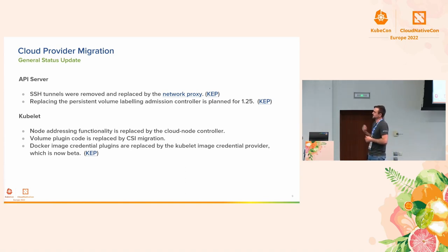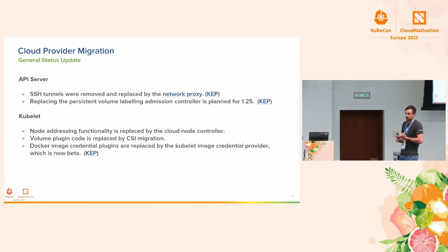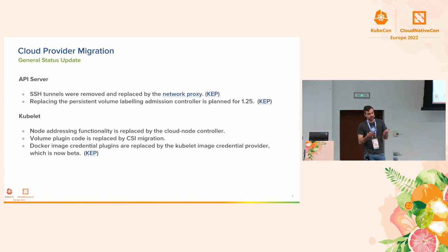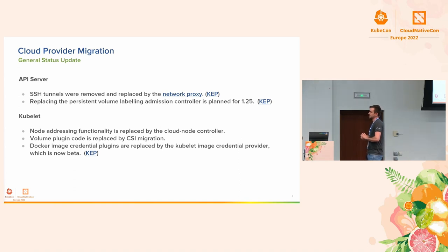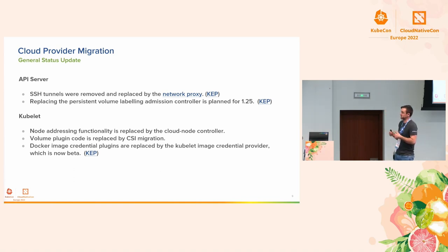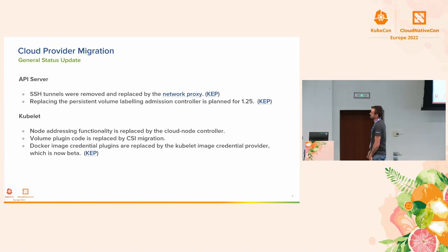The next component is Kubelet. Kubelet also has some cloud provider code that needs to get extracted. There is node addressing functionality: when Kubelet starts up, it needs to figure out what addresses to attach to the node object so that communication can happen between the node and the API server. That is being replaced by a brand new controller being added to the cloud controller manager — the cloud node controller — not to be confused with the cloud node lifecycle controller or the cloud node IPAM controller.